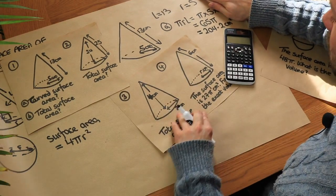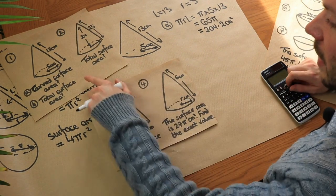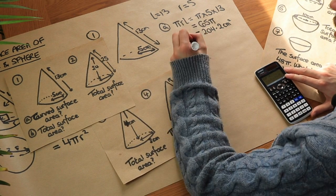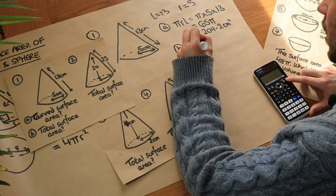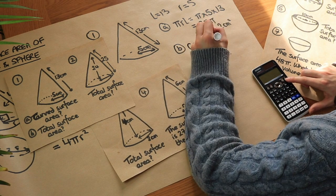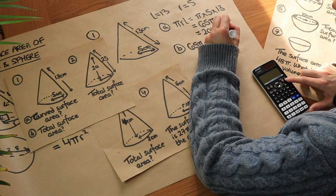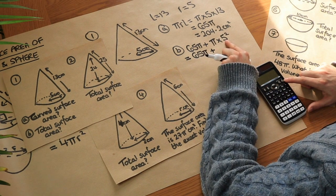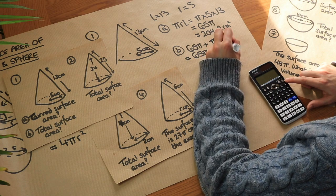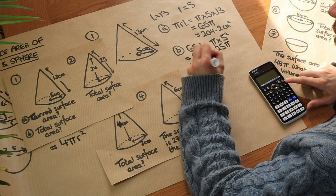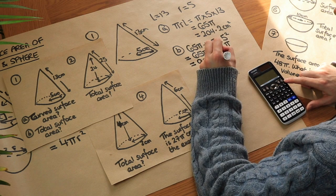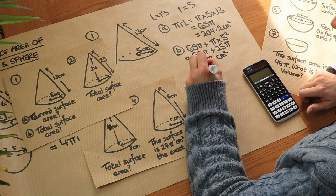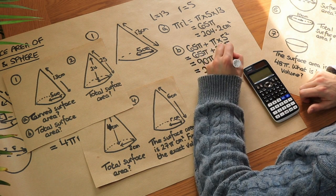It's an area, so it's centimetres squared. Then for the total surface area, we just add the bottom circle: 65 pi plus pi times 5 squared. Pi r squared is the area of the circle at the bottom, so that's 65 pi plus 25 pi. In total that is 90 pi centimetres squared. Putting 90 pi into the calculator gives 282.7 centimetres squared.